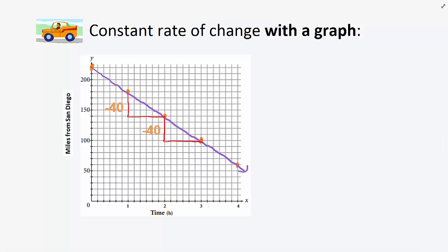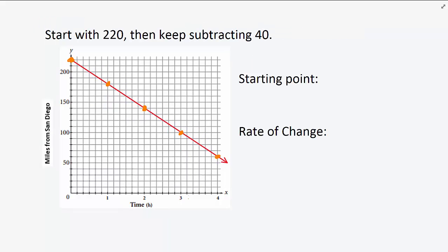The points on the graph show that the data is linear. Let's take a closer look at the relationship between the graph and the recursive rule.